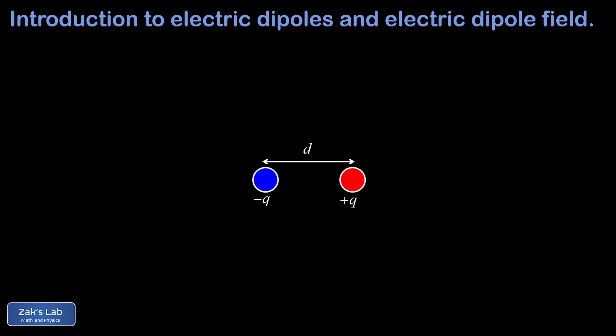It's handy to wrap these two properties into a single quantity we call the dipole moment. The dipole moment is a vector that points in the direction of the axis of the dipole from negative to positive, and the magnitude of that vector is p equals qd. This expression qd is going to pop up frequently in our study of dipoles, and it's a really handy simplification to replace qd with p whenever it appears.